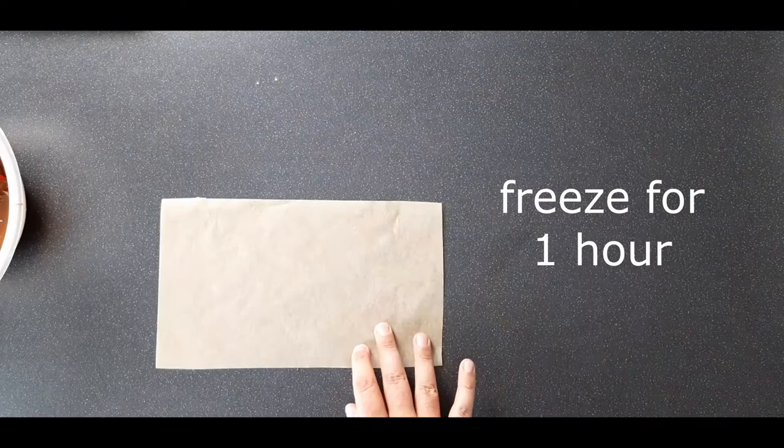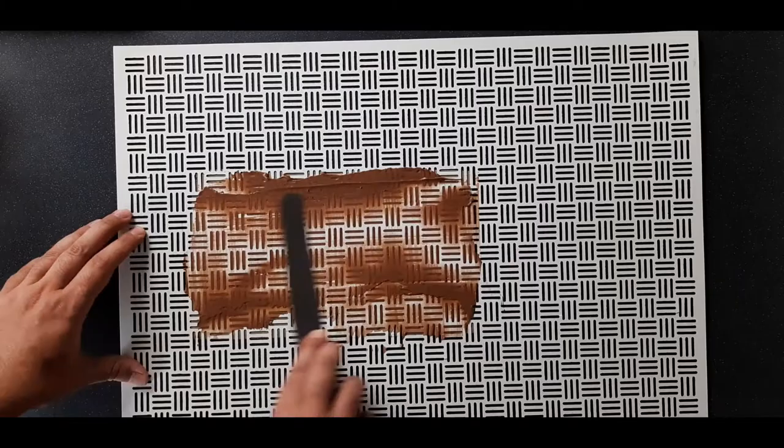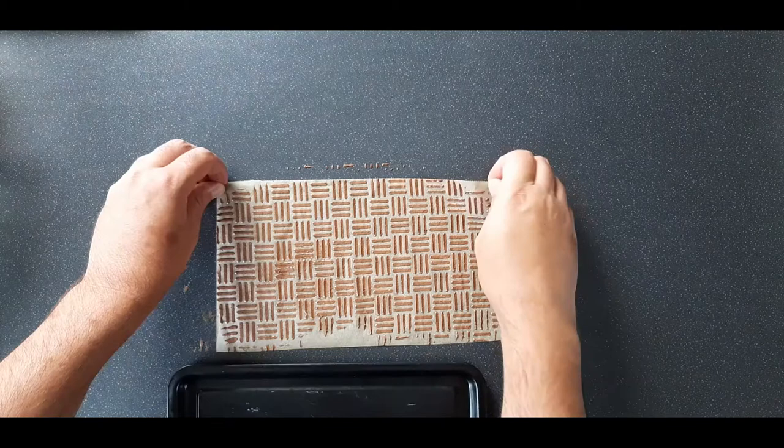For this next design, we're going to use an actual stencil, and this one's nice and easy. Just place your stencil over a bit of baking paper and spread some of your mixture over the stencil, making sure you keep it on the baking paper. Scrape off all of the excess and then carefully remove the stencil from the baking paper. Again, onto a tray and freeze.